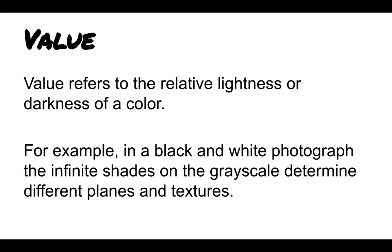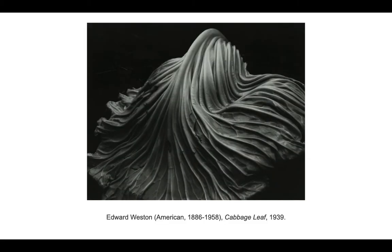Value, as we discussed, is the relative lightness or darkness of a color. When you are looking at a black and white photograph, all of the shades of gray help determine the different planes and textures of a form. In this photograph from 1939 of a cabbage leaf by American photographer Edward Weston, we can see that the infinite shades of gray help create the veins of this form and give it volume.